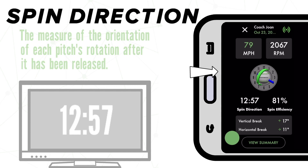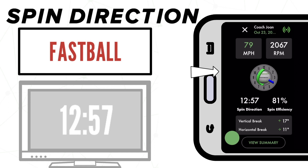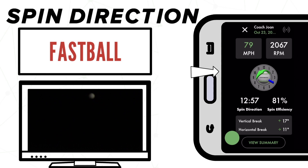Our first example we're going to look at here is the fastball that we saw earlier. Hopefully in seeing the pitch and the app displayed side by side, you can see exactly what these numbers represent. I know you've pretty much got it by now, but let's take a look at one more example to bring this thing home.